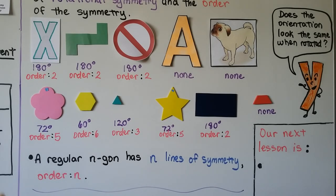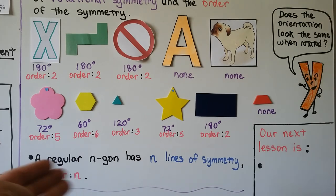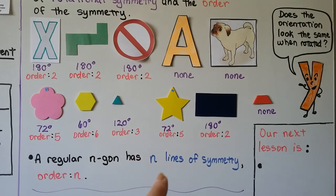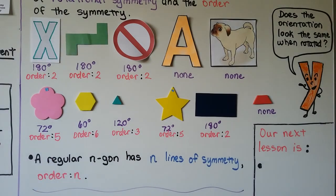And a regular n-gon — some polygon that has numerous sides that we don't know, so we're using a variable — an n-gon has n lines of symmetry, and that would be order n.